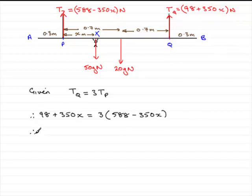Now all we need to do is expand the bracket on the right-hand side. So three times 588 turns out to be 1764.